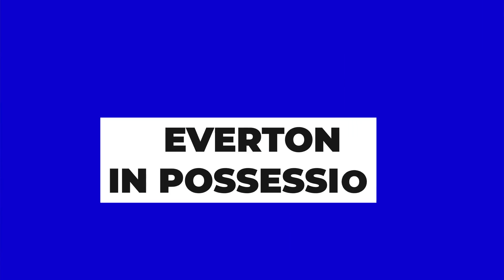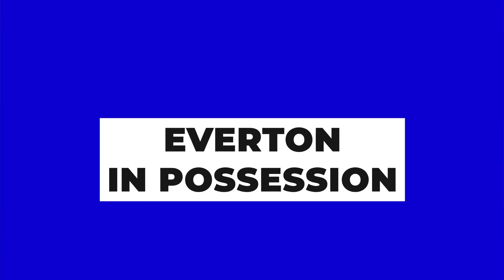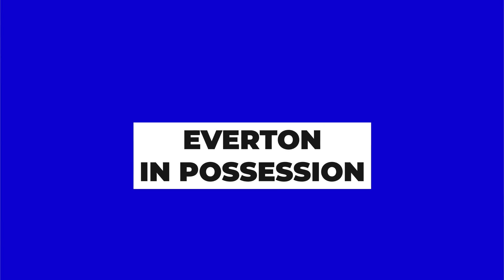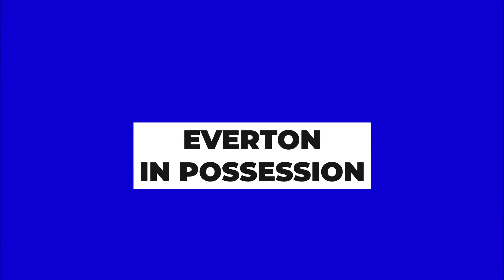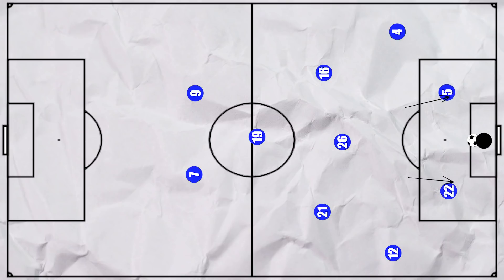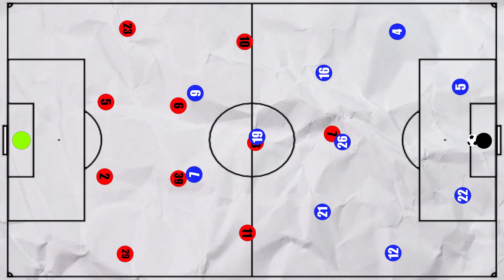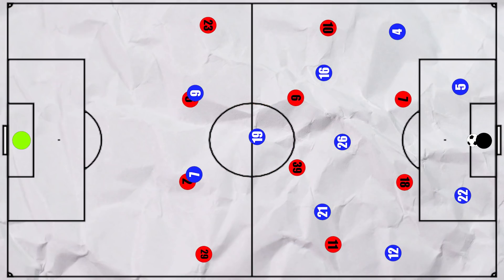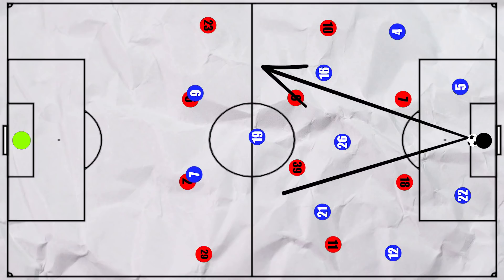Let's take a closer look at the tactics, starting with what Everton looked to do in possession. When Everton had the ball from a goal kick, both centre-backs would drop into the box to receive, but United would push Cavani and Fernandes high to press, so Everton would often be forced to go long.